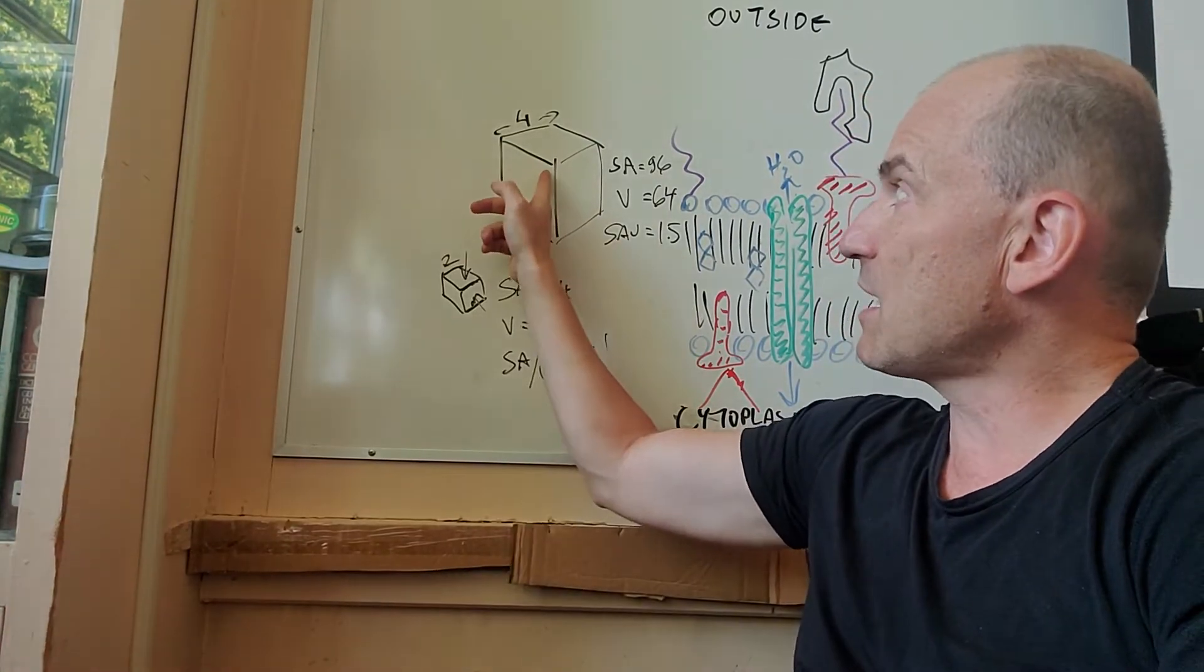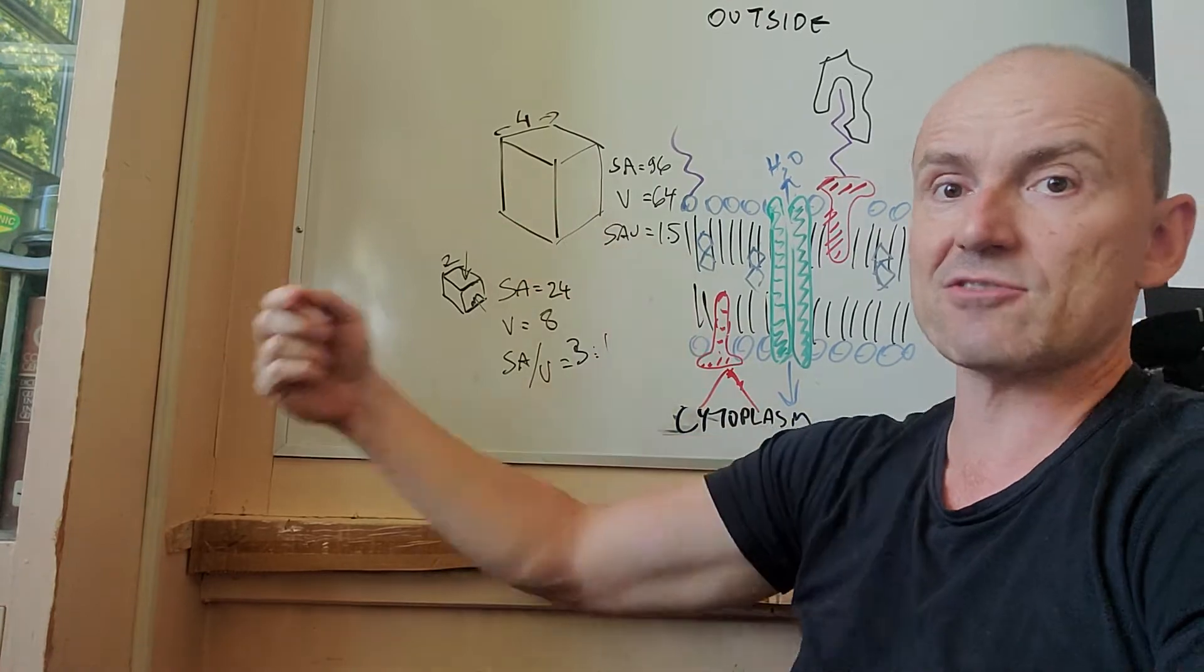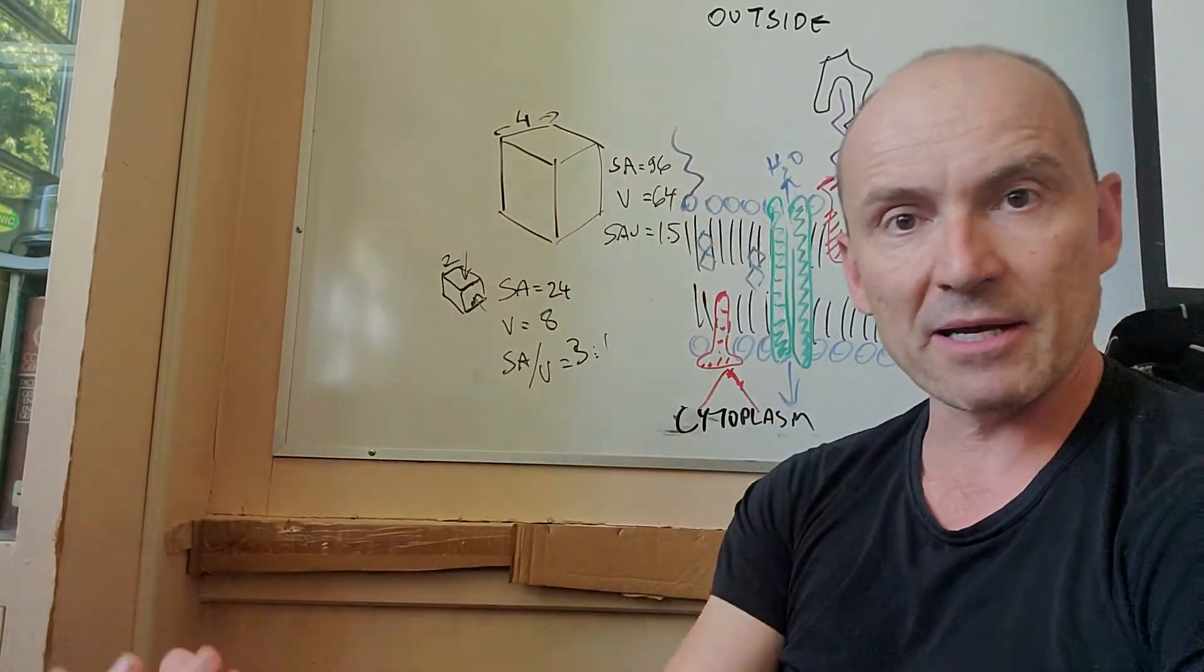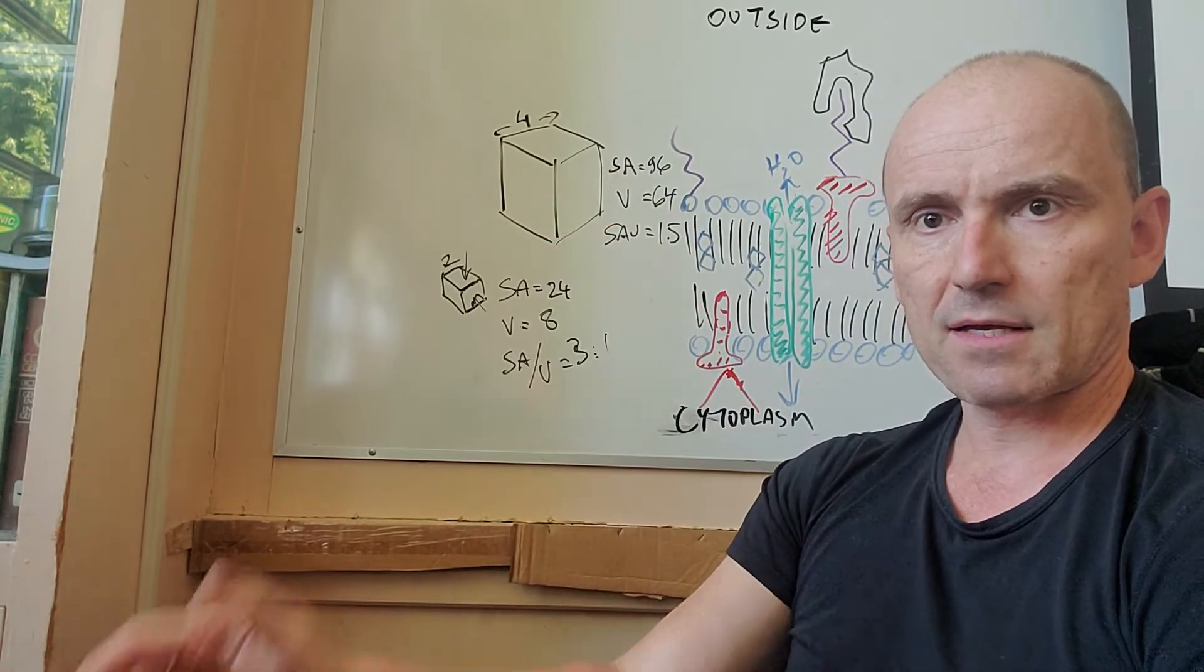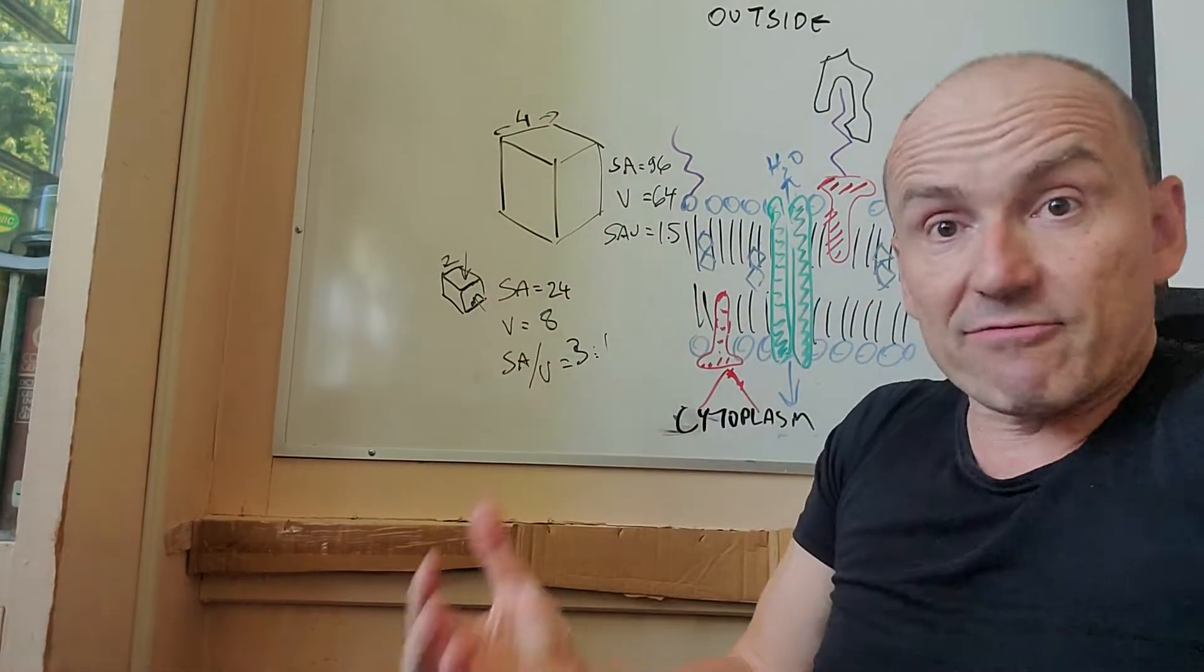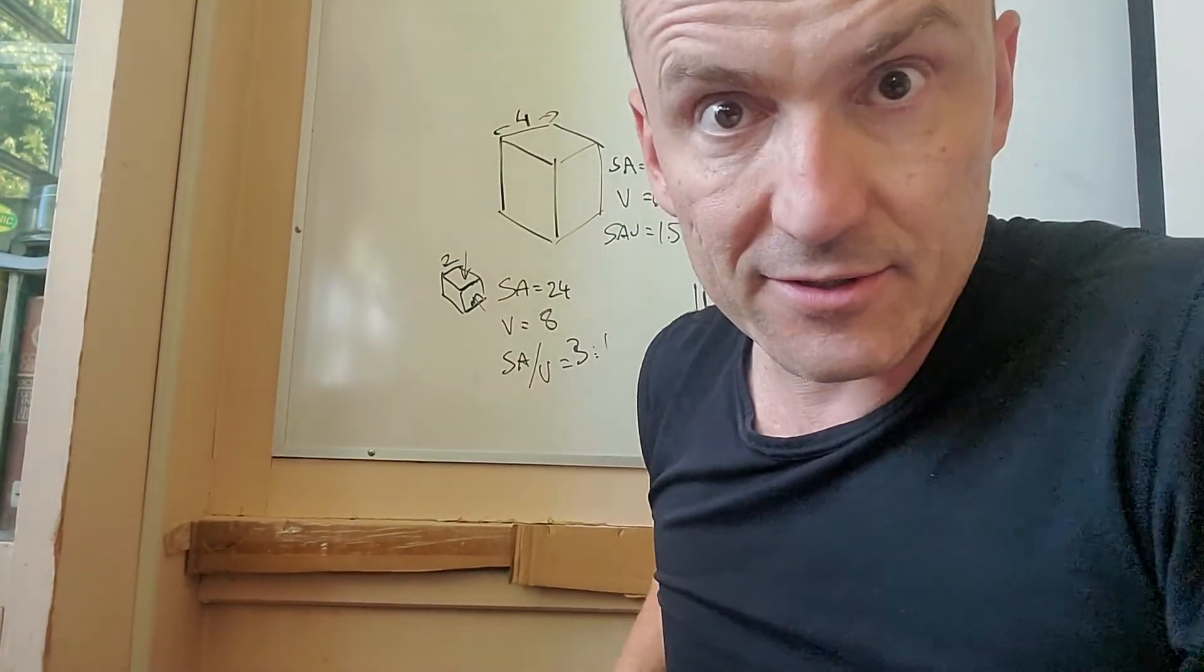So, for example, like if there's DNA, there's proteins being made in the center, they have to make it all the way out. The bigger the cell is, the farther they have to diffuse. That's basically the implication for cells of surface area to volume.